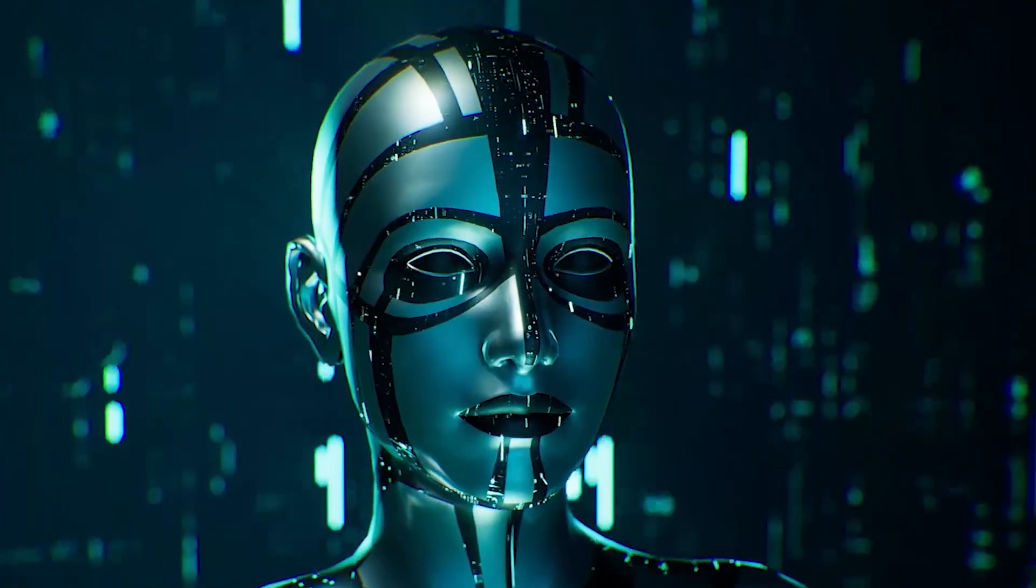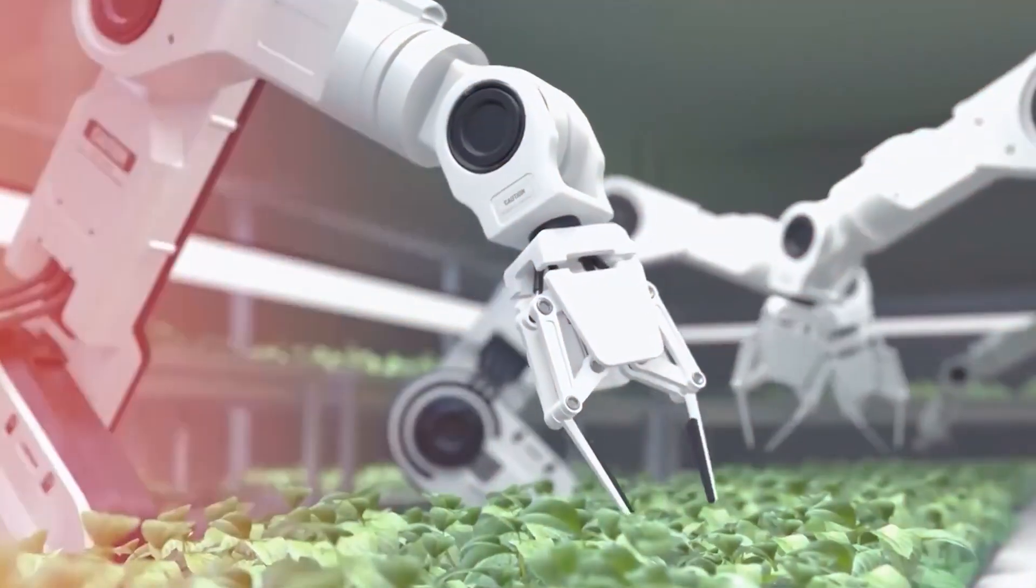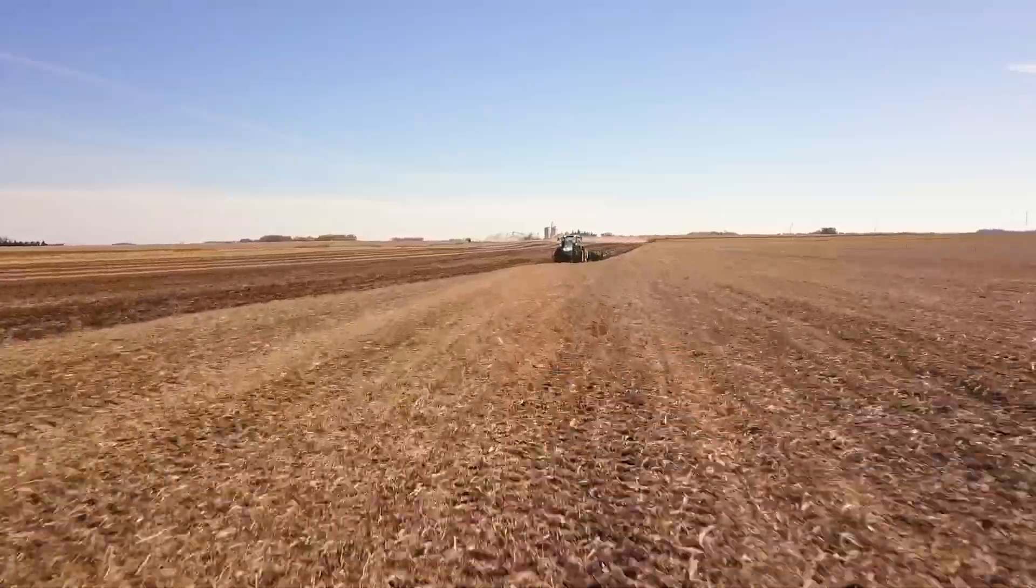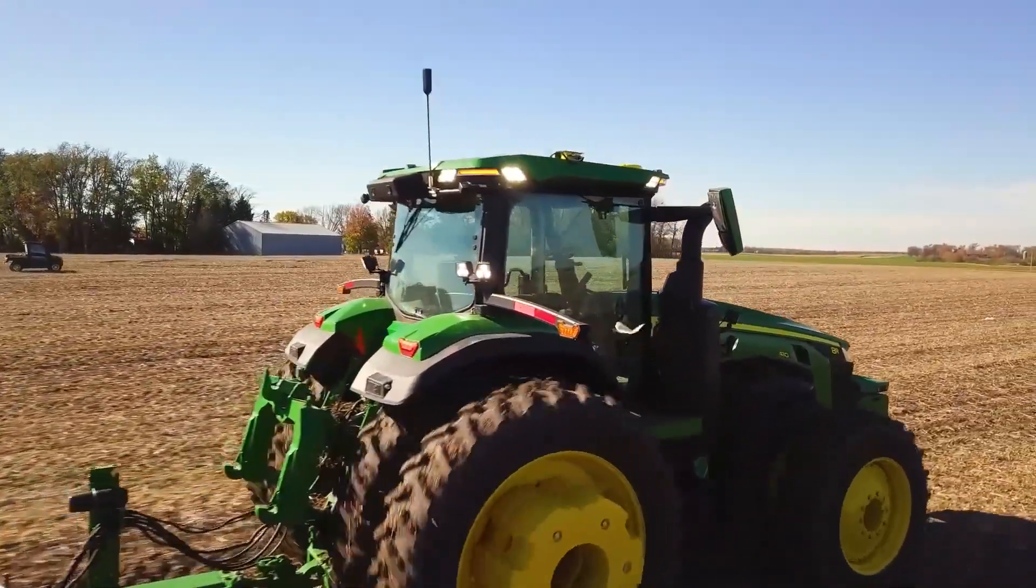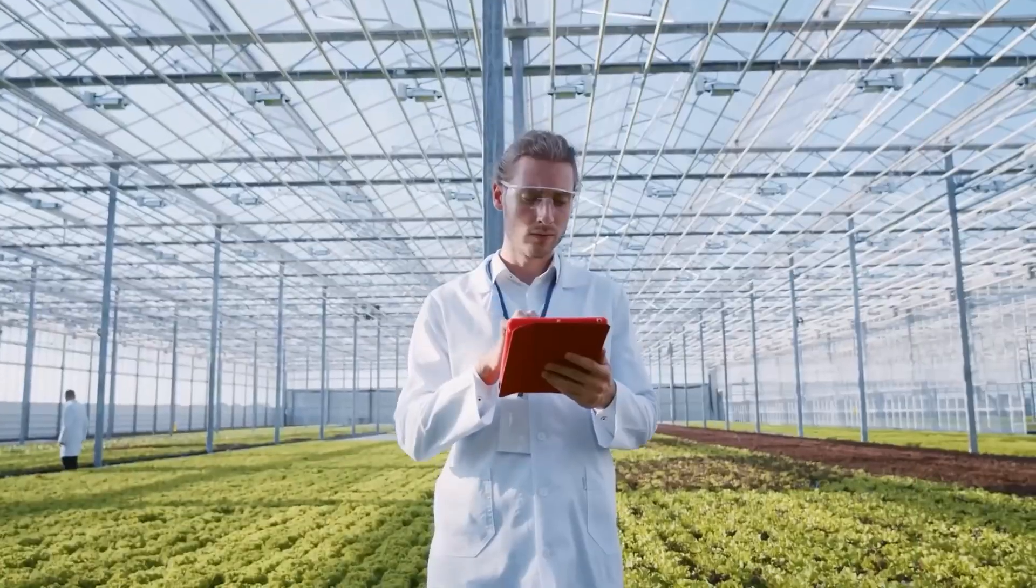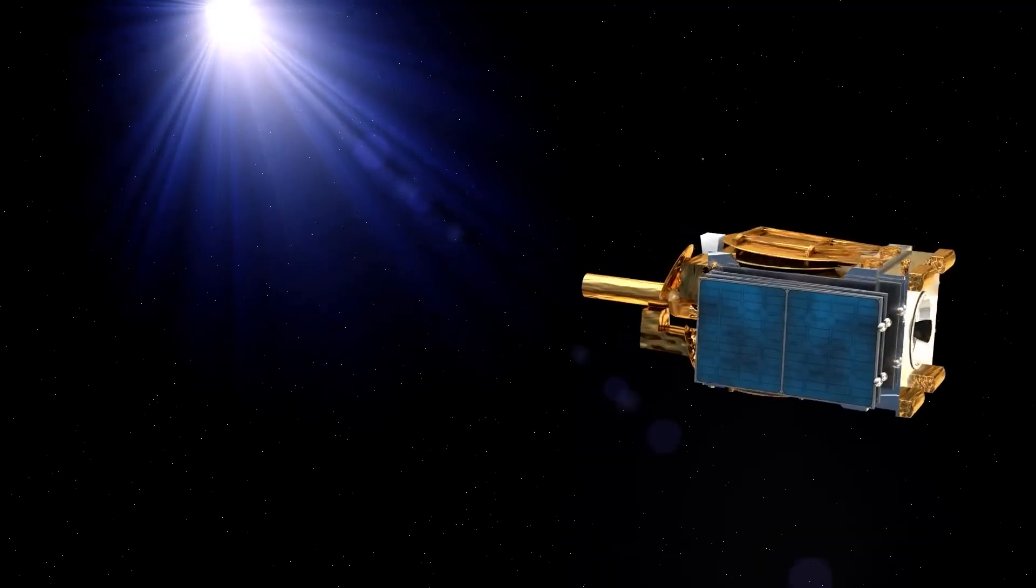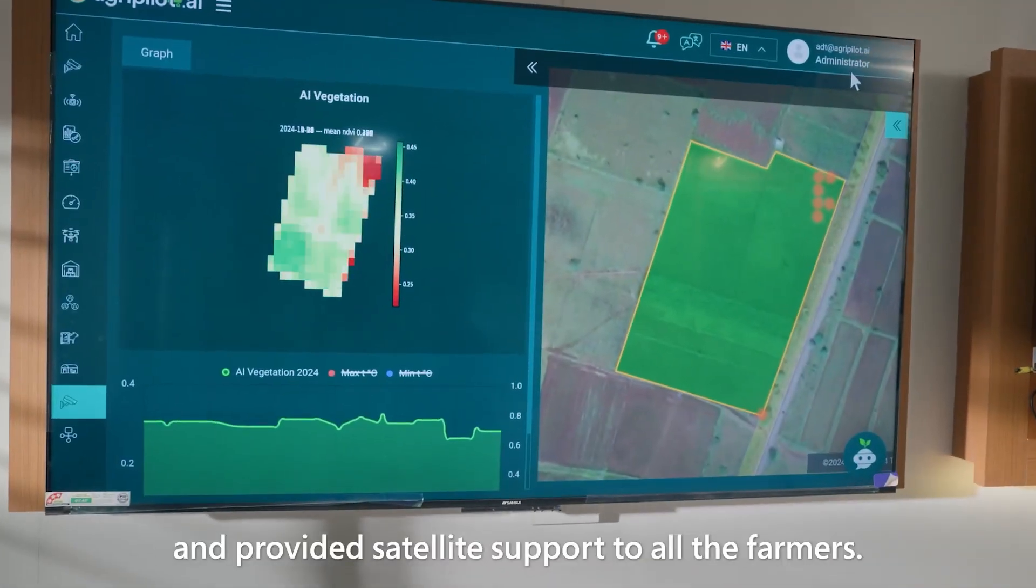But while the world was watching these game-playing machines, AI was quietly revolutionizing something far more fundamental: how we grow our food. In the heartlands of America, AI-powered tractors now drive themselves with centimeter precision, using less fuel and reducing waste. But here's what's truly remarkable: AI systems analyze satellite imagery to predict crop yields months before harvest.